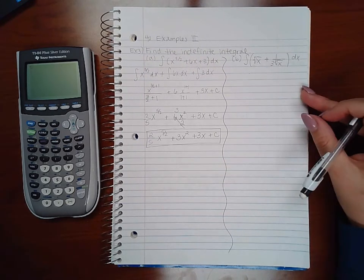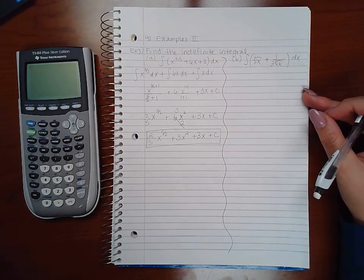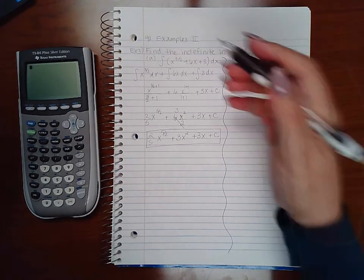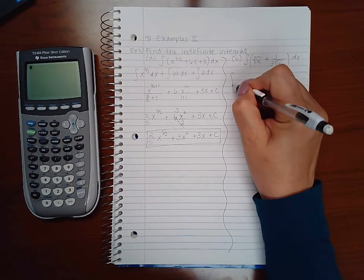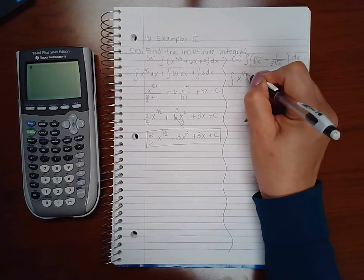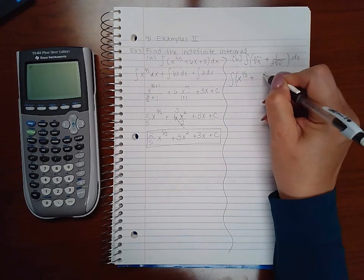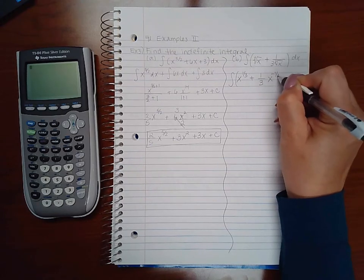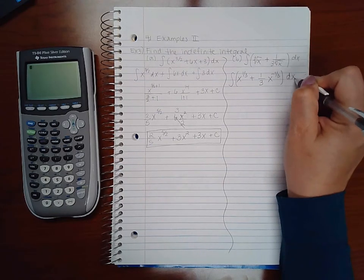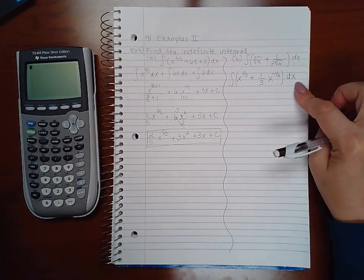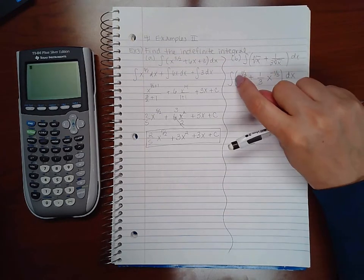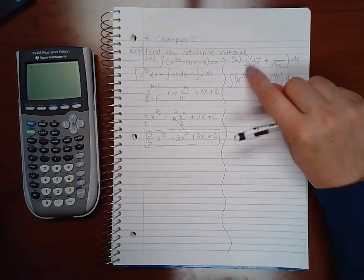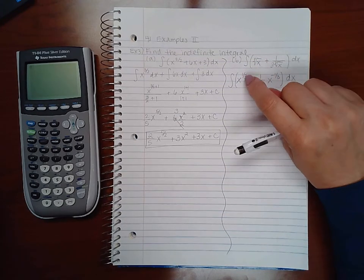As we said before in examples part one, you cannot take the integral of radicals when they're in their radical form, so you do have to convert this into exponential form, which would be x to the one-third plus one-third x to the negative one-third dx. Now why is this the way it is? There was no coefficient, so I have no coefficient. There is an exponent of one, which is my numerator, and my radical index is three.